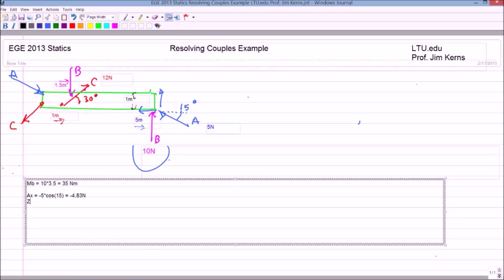And AY is equal to, that is five, and that's positive Y direction. Five times the sine of 15 degrees, and that is equal to 1.29 newtons.